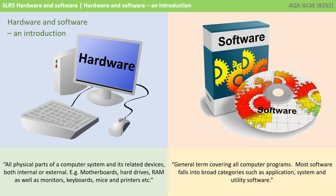Software is a very general term that covers all computer programs. Most software falls into broad categories such as application, system, or utility software.